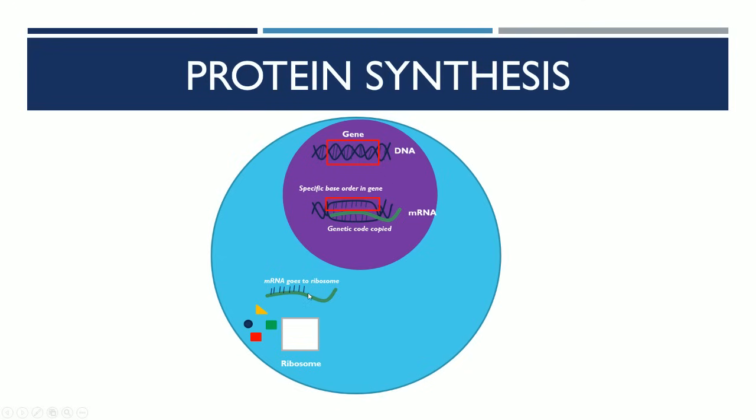The ribosome takes a look at that and it codes for the joining of specific amino acids to make a protein. In this case, it has coded for the production of a protein with the sequence of amino acids in this particular order, going from yellow, red, blue to green.